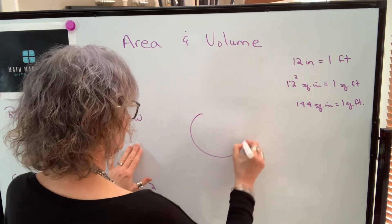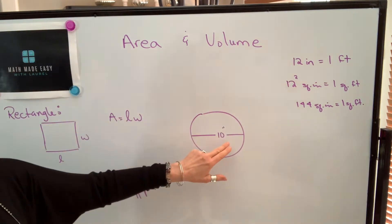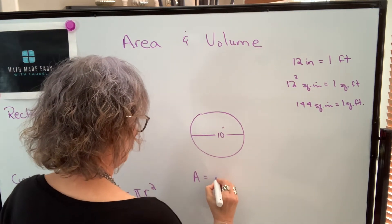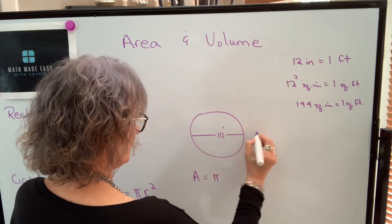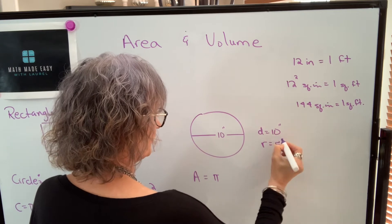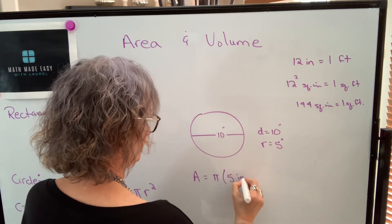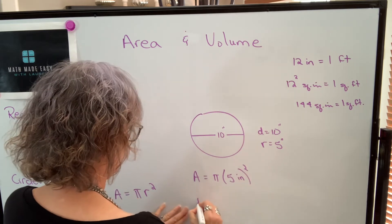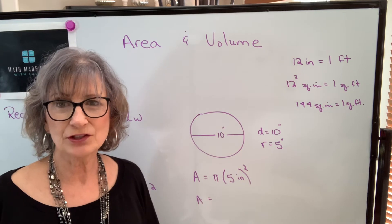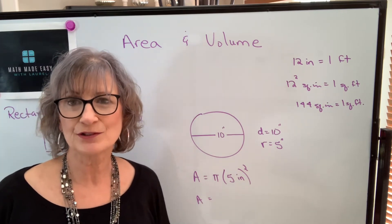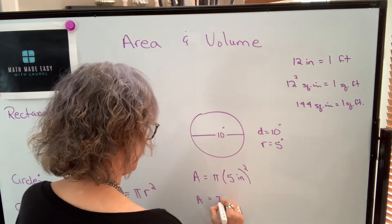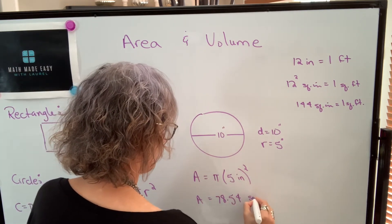For example, if we have a circle that had a diameter of 10 inches, the area could be found by taking the radius. If the diameter is 10 inches, the radius would be 5 inches. So we're going to take that 5 inches and square it. You don't need to put the unit in if you understand that if your unit is in inches, your area will be automatically in square inches. So 5 squared is 25, times pi will be 78.54 square inches.